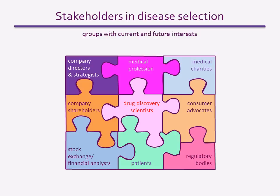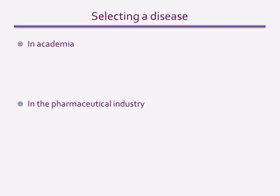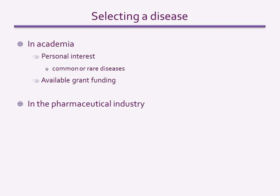Different drivers tend to influence researchers working in different arenas. The main environments that drug target research takes place in are academic institutions, such as universities or research institutes, or within a pharmaceutical company. In academia, the main drivers for studying a particular disease are usually personal interest in the disease and the funding available to support the research. Most academic researchers have to compete nationally and internationally for funding from external bodies, such as government-based research councils or medical research charities. Academic scientists are strongly influenced by the disease priorities of funding bodies, but they have access to a wide range of funding sources and are just as likely to search for targets to treat a rare disease as a common one.